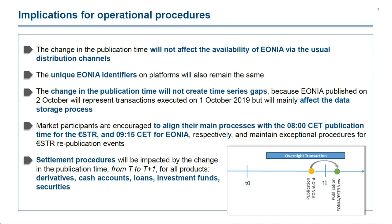Some implications people were worried about will not come true. It will not affect the publication of EONIA via the usual distribution channels — Reuters and other market data vendors where you find EONIA today will continue. EONIA will be published via these channels in a recalibrated way. All unique identifiers incorporated in systems stay the same, and in terms of the time series there is no change. The one thing to incorporate is that the publishing date no longer matches the date EONIA is applicable to — there is a T to T+1 gap.